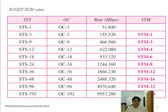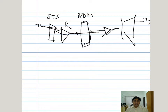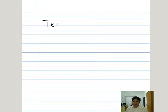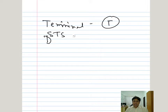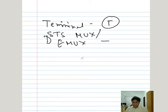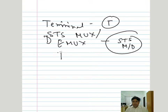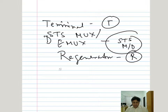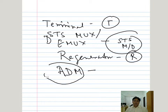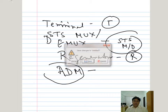Let us list the different devices in SONET. We have first called terminal, then we have something called STS multiplexer or demultiplexer, then we have the regenerator (symbol R), and we have ADM — Add and Drop Multiplexer. These are the different types of devices available in SONET.